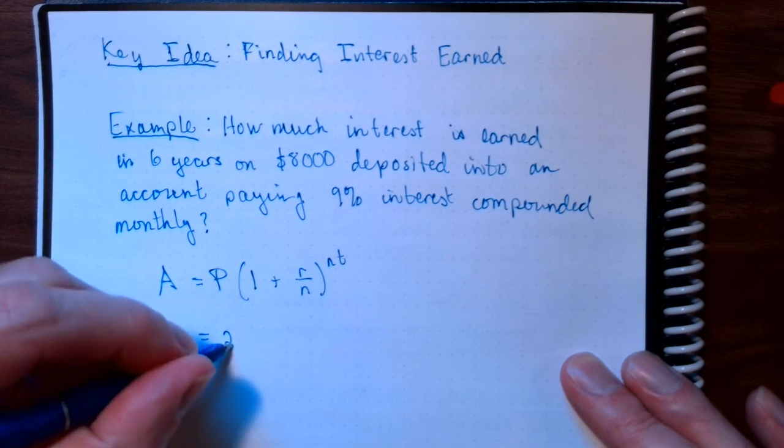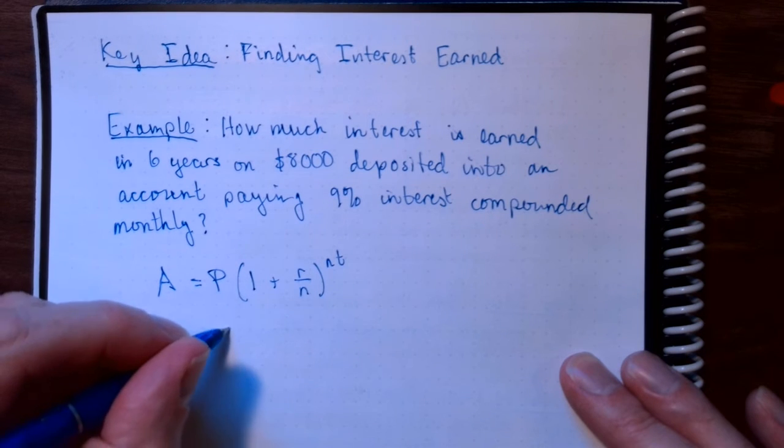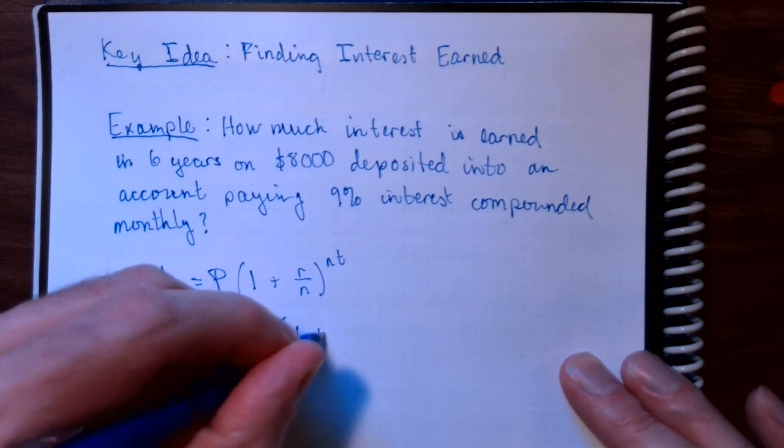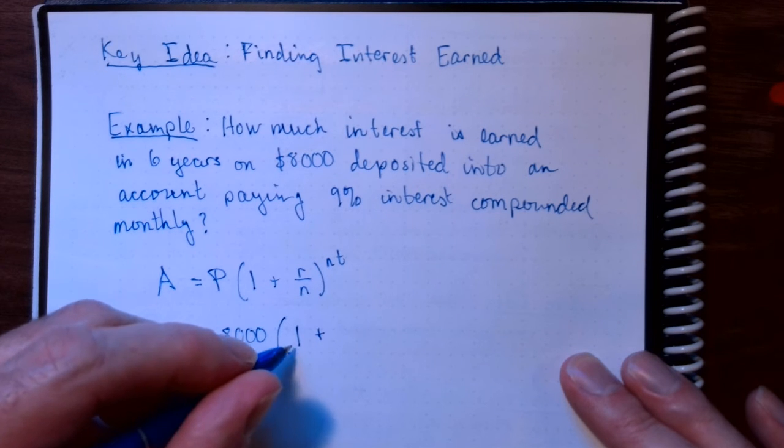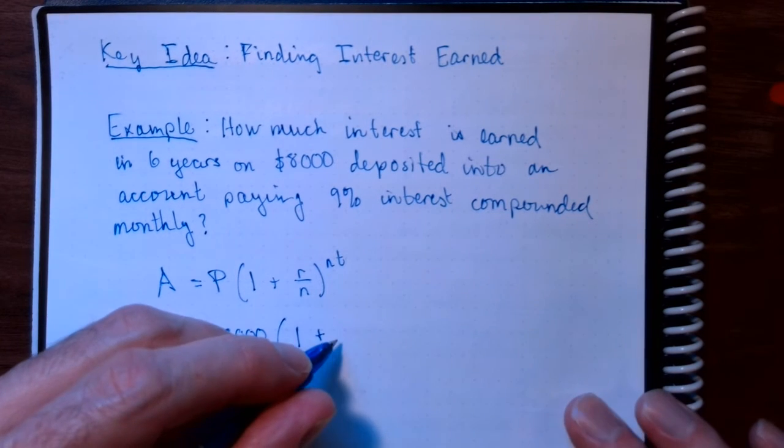So in our example, that would be $8,000. That's the initial deposit, so the principal. That 1, remember that's always there. You have 100% of what you started with plus extra.